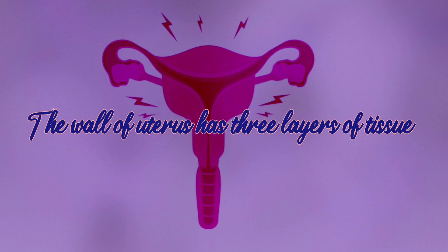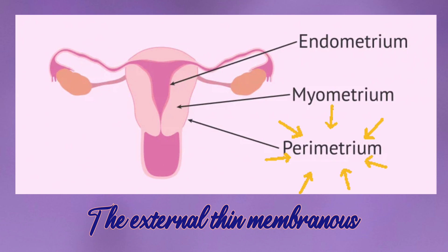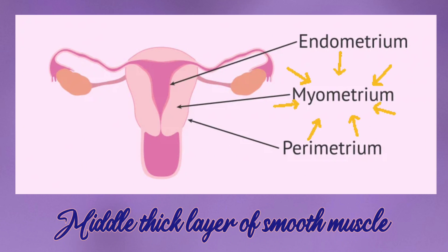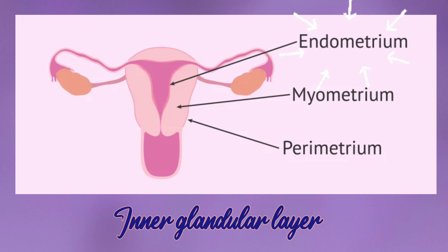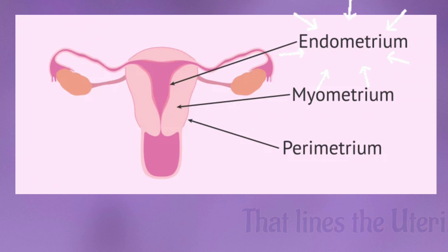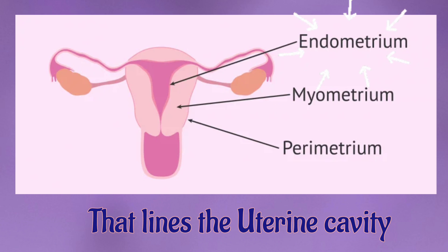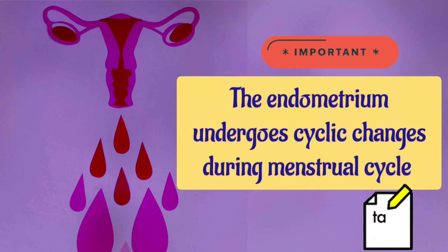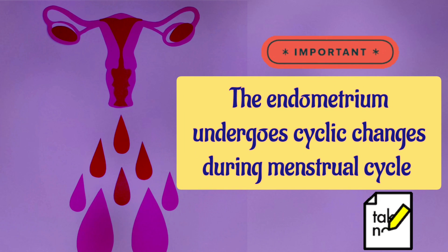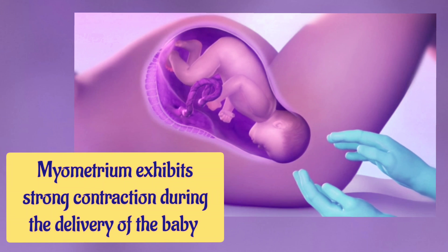The uterus is a muscular bag. The wall of the uterus has three layers of tissue: the external thin membranous perimetrium, the middle thick layer of smooth muscle called myometrium, and the inner glandular layer called endometrium that lines the uterine cavity.